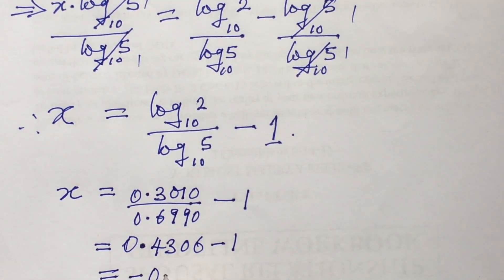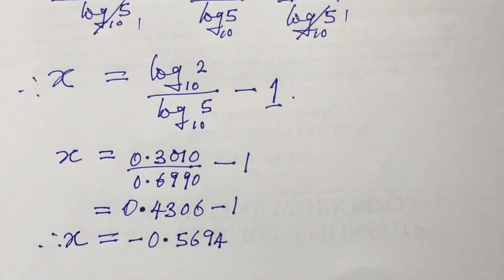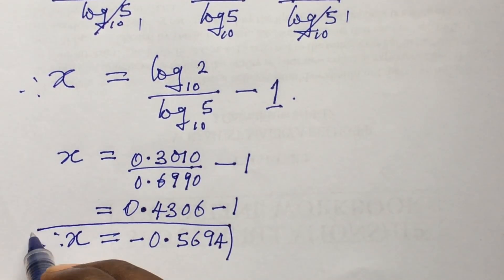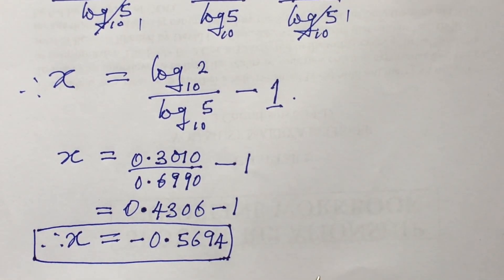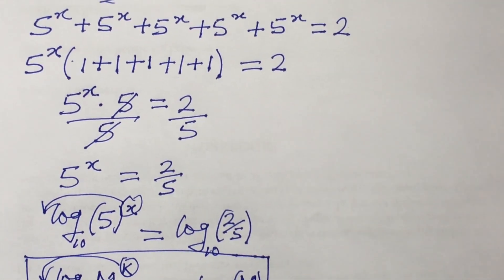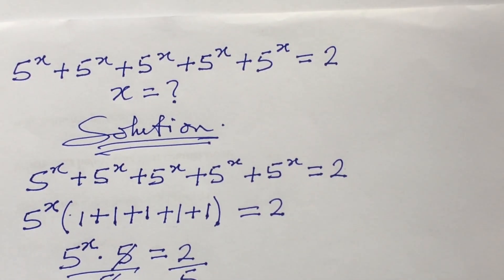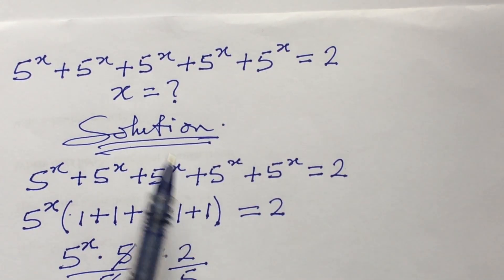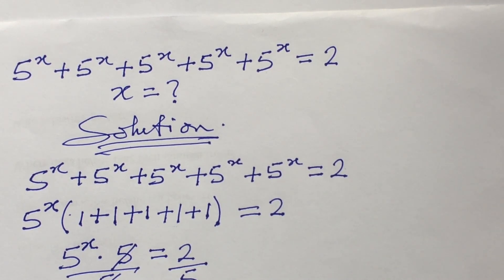Subtracting 1 from 0.4306, we get x equal to approximately minus 0.5694. I've gone ahead to input this value into our initial equation, and when I simplify it gives approximately 2.00034, which confirms the value of x is correct.